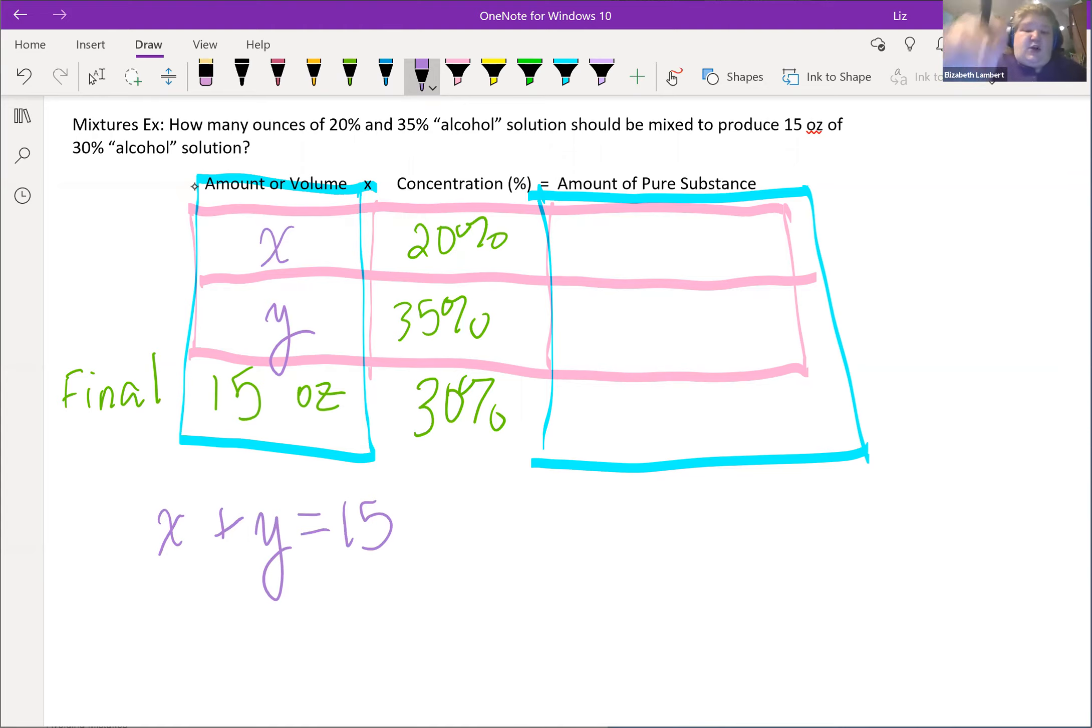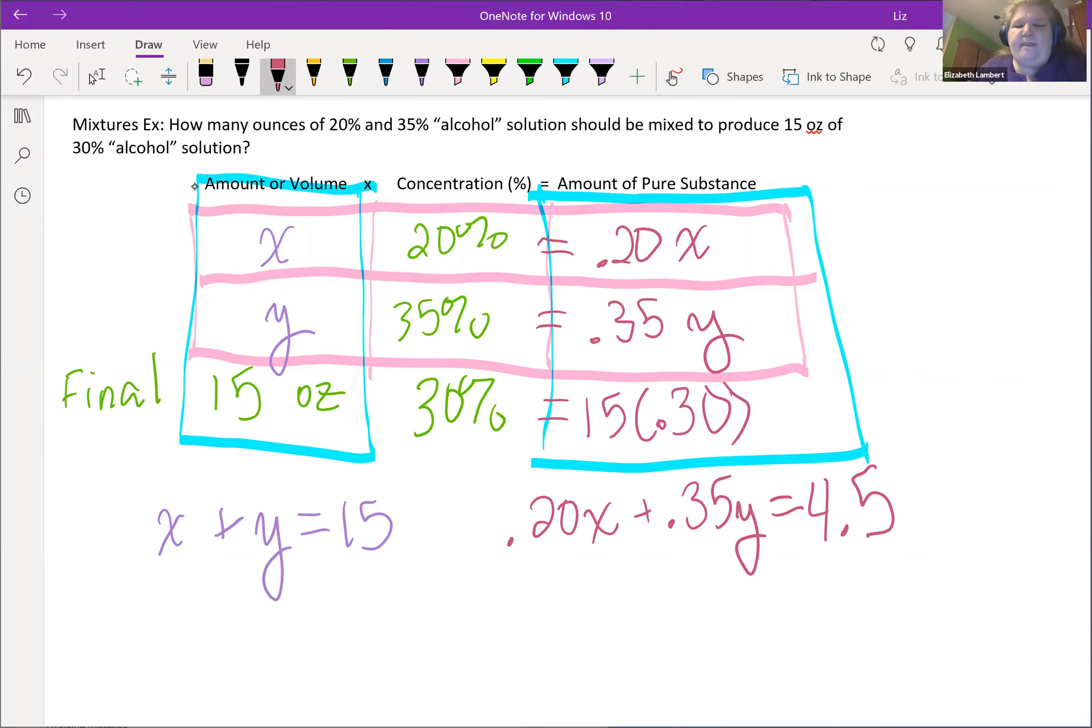Now to figure out the other one, I need to know what goes in this column on the right, and this is where I use my formula. So the amount times the concentration: x times 20% or 0.20 is 0.20x. Y times 35% is 0.35y. 15 times 30% is literally 15 times 0.30, which we can crunch on the calculator. So that is our second equation: 0.20x plus 0.35y equals 15 times 30, which is 4.5.